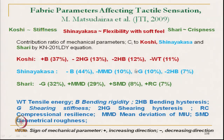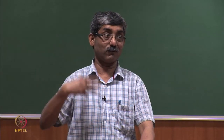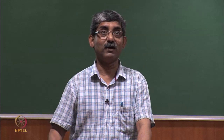G is shear stiffness — higher shear stiffness will give lower Shinayakasa. 2HB is bending hysteresis — higher bending hysteresis will give lower Shinayakasa value. We can see that from these contribution values we can get an idea of what Shinayakasa means. It is a type of tactile feeling — one type of soft, flexible feeling.